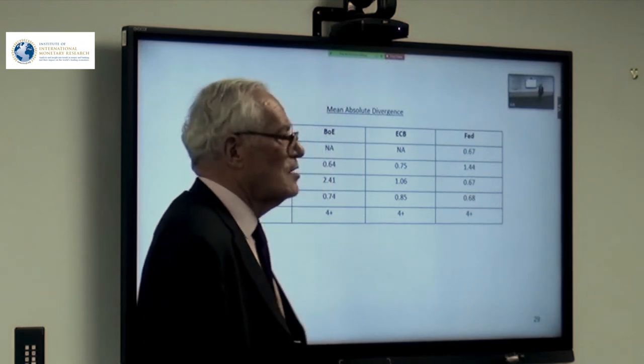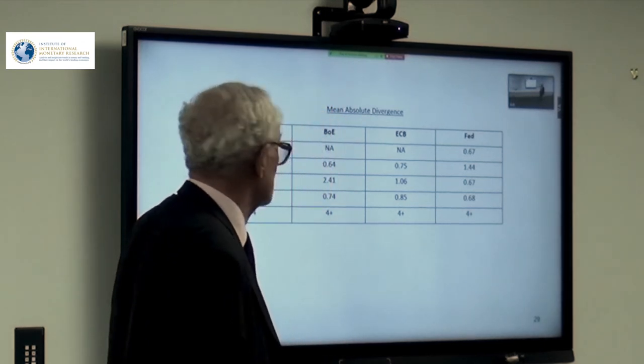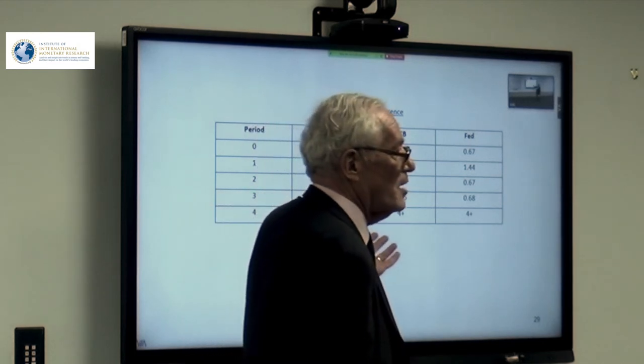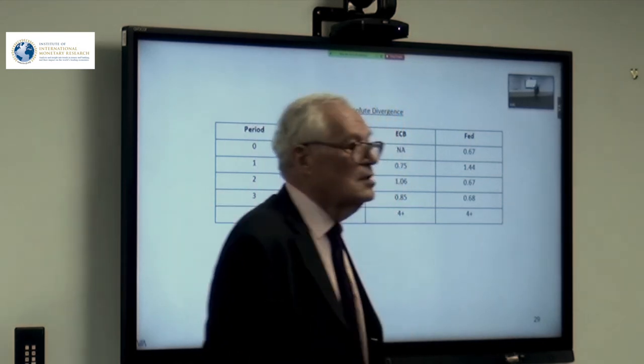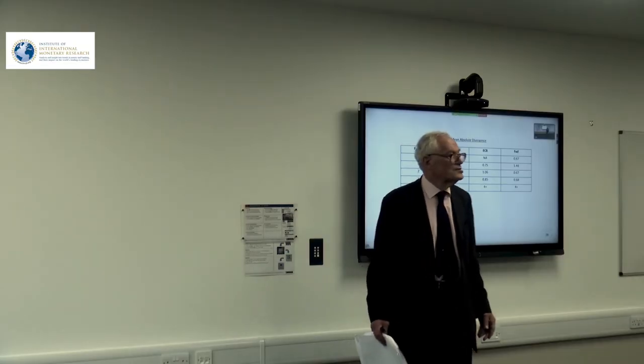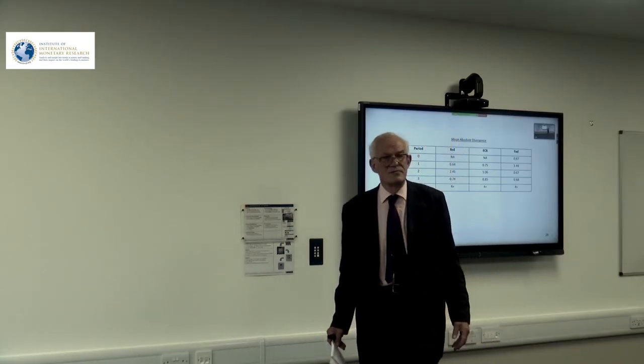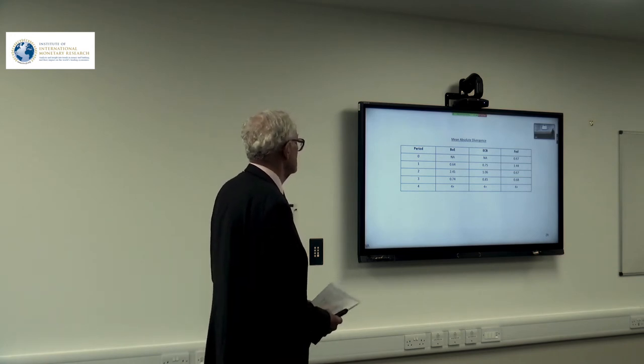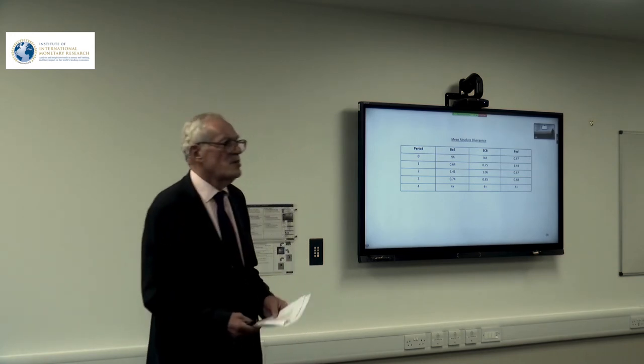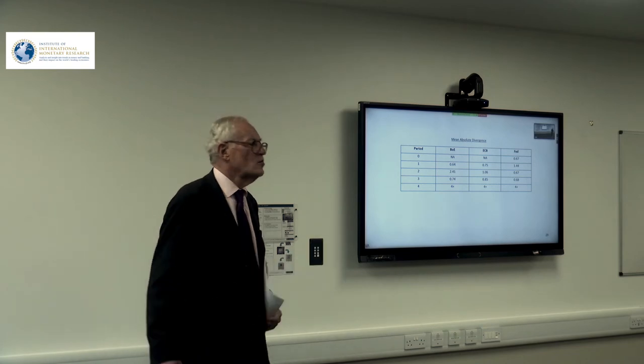Now, why have we had this divergence, particularly in this latest crisis? Well, there are a number of, and I'm going to talk about four reasons. The first reason is that the forecast that central banks put out is fake news. They don't actually believe it, but they simply say we're going to get back to target because they want to persuade everybody else that we're going to get back to target.